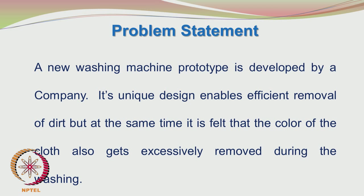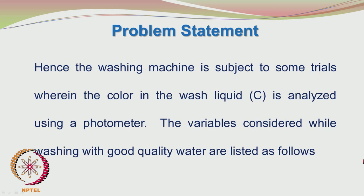The problem statement goes like this: a new washing machine prototype is developed by a company. Its unique design enables efficient removal of dirt, but at the same time it has been felt that the colour of the cloth also gets excessively removed during the washing. So the washing machine is subject to some trials wherein the colour in the washed liquid C is analysed using a photometer.